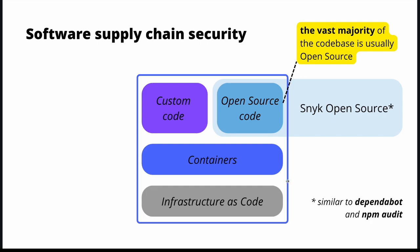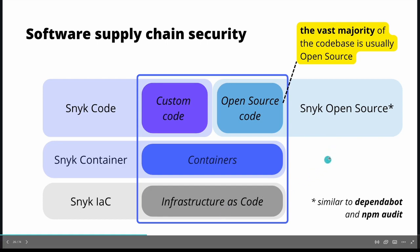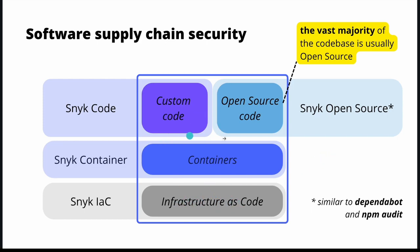Snyk Open Source is a tool we can use to monitor those dependencies — it is similar to Dependabot or NPM Audit, but it's part of the entire Snyk ecosystem. Snyk Code is a solution that monitors risks, vulnerabilities, and potential issues in your custom code using sophisticated artificial intelligence. Going further, you can use Snyk Container to manage the security profile of your containers, and Snyk Infrastructure as Code to add an additional layer of security at the infrastructure layer below containers.